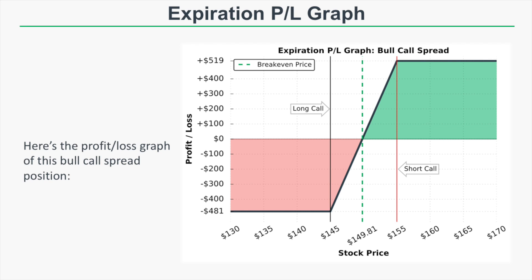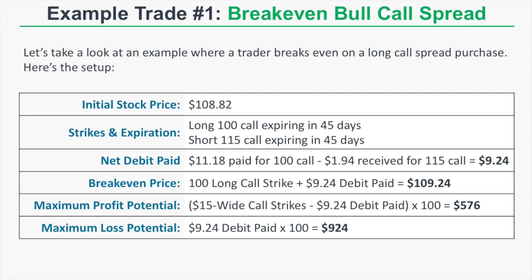Let's look at Example 1: a scenario where a bull call spread breaks even at expiration. The initial stock price is $108.82, and we're buying the 100/115 call spread expiring in 45 days. We pay $11.18 for the 100 call and collect $1.94 for the 115 call, bringing our net debit to $9.25. The break-even price is the long call strike of $100 plus the $9.25 debit, which is $109.25. The maximum profit potential is the $15-wide spread minus the $9.25 debit times 100, which is $576. The maximum loss is $924.